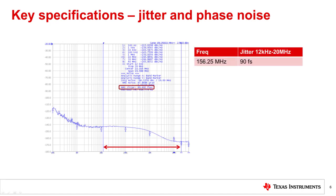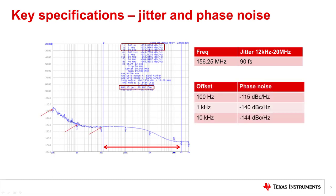The phase noise plot shows the typical performance expected at 156.25 MHz, 90 femtoseconds jitter for an integration band of 12 kHz to 20 MHz. The phase noise at 100 Hz offset is minus 115 dBc per Hz, 1K at minus 140, and minus 144 dBc per Hz at the 10 kHz offset. We'll go into further details about phase noise and jitter in some of our other training modules.